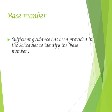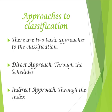Sufficient guidance has been provided in the schedules to identify the base number. Now we come to the different approaches to classification. There are two basic approaches: the direct approach, which goes through the schedules directly, and the indirect approach, which goes through the index first. These are the two approaches to find the class number of any subject from the schedules.